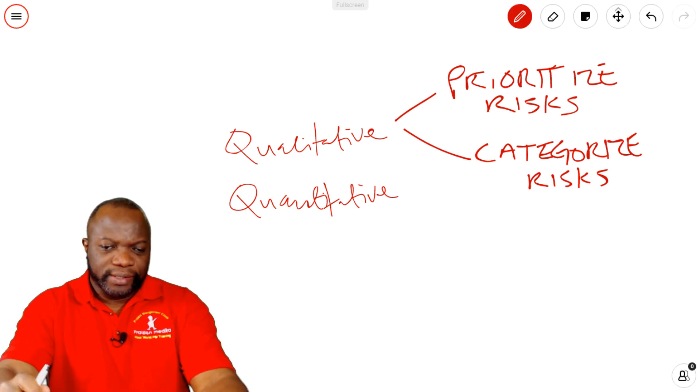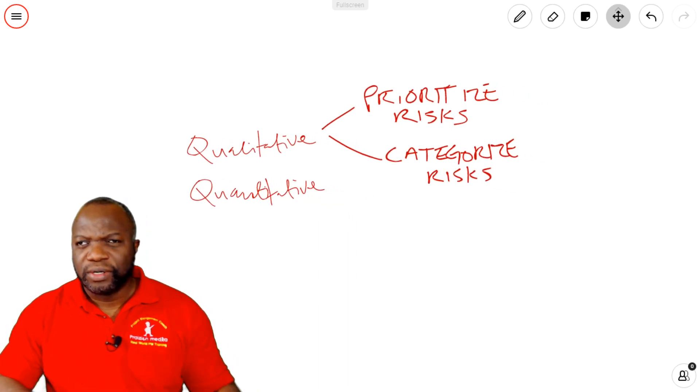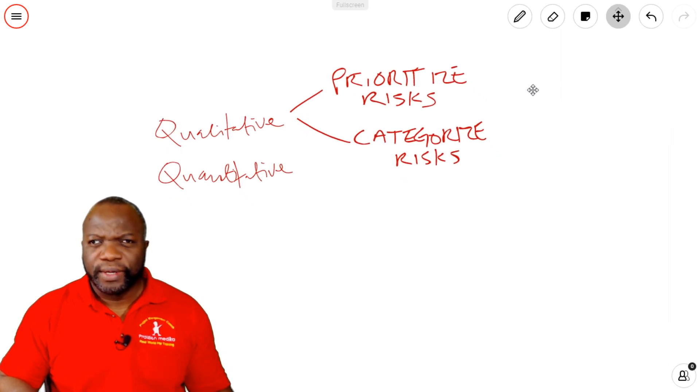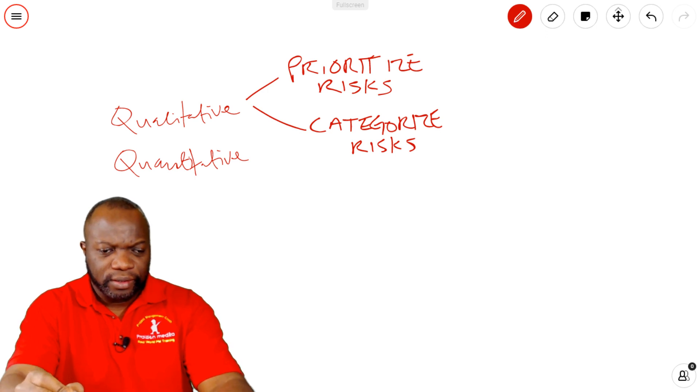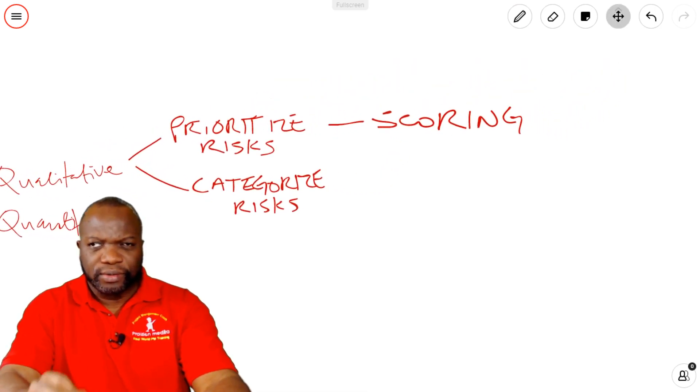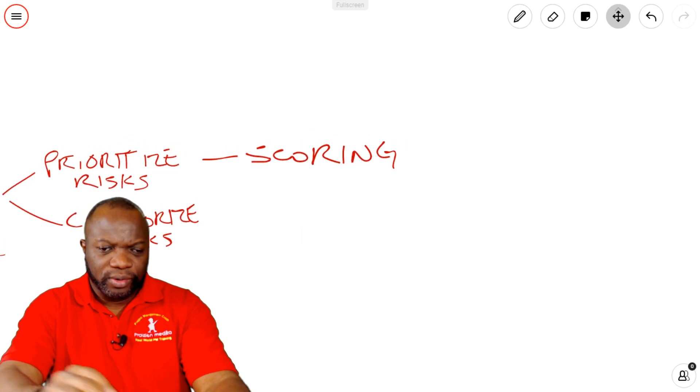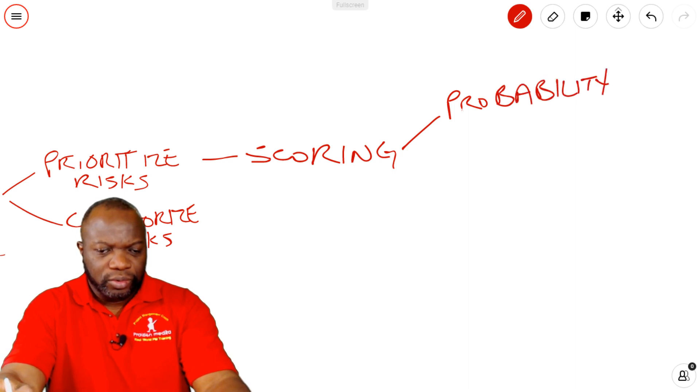Now how do we go about the prioritization of the risks? Let's take a closer look at this. So to prioritize risks, you're going to use a simple concept of scoring. And when we say scoring the risks, what exactly do we mean? Let's dig into this a little bit more. When we talk about scoring the risks, we talk about a probability rating.